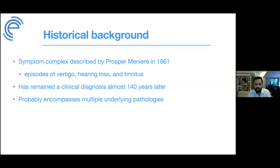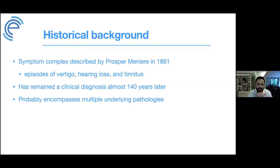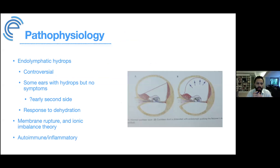Another thing that has changed as we understand Meniere's disease more is that it's probably more of a syndrome than a disease — not one single entity. We're likely talking about different inner ear pathologies that manifest with the same symptoms. This matters because as therapies progress, differentiating the underlying pathologies causing vertigo, hearing loss, and tinnitus becomes important.